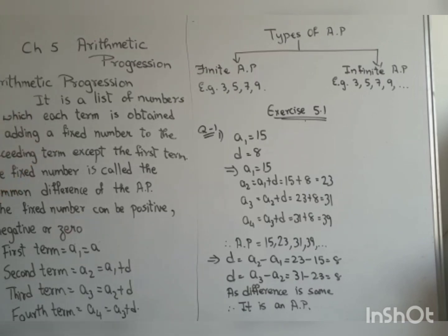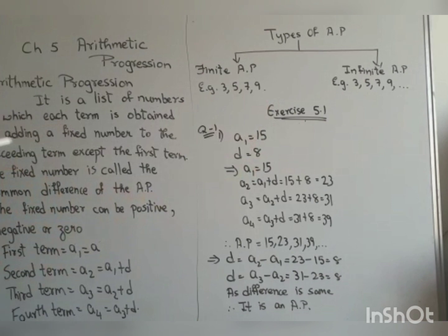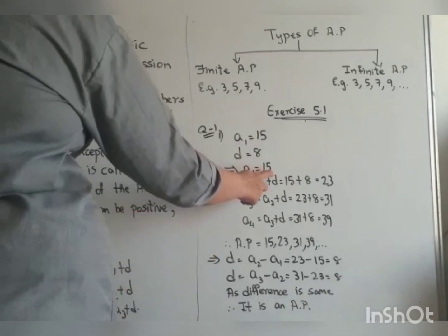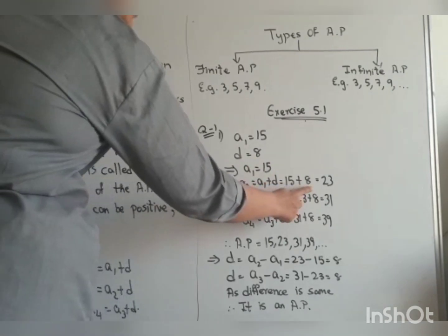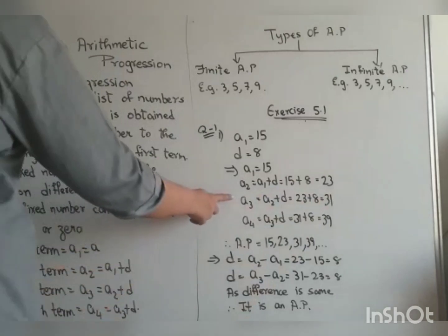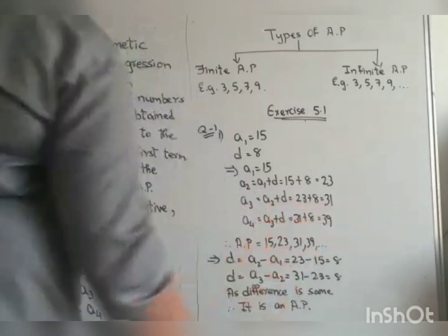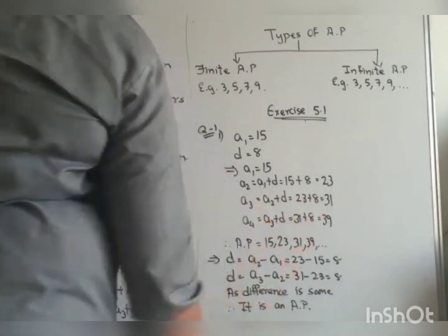The taxi fare after each kilometer, when the fare is Rs.15 for the first kilometer and Rs.8 is added for each additional kilometer. So A1 equals 15, difference D is 8. A2 equals A1 plus D, that is 15 plus 8 equals 23. A3 equals A2 plus D, that is 23 plus 8 equals 31. A4 equals A3 plus D, that is 31 plus 8 equals 39.